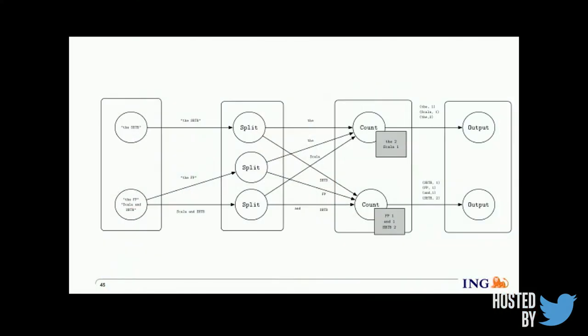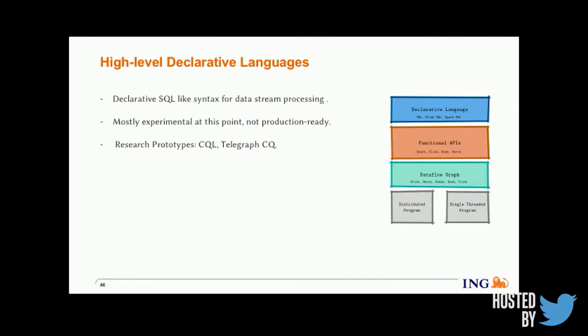We need to be careful about this kind of partitioning because it might result in data skew. The next level of abstraction is high-level declarative languages such as SQL, Flink SQL, and Spark SQL — SQL abstractions on top of the functional API. However, these have mostly been research prototypes so far; for instance, the Flink SQL documentation states it's not ready for production use cases, so we won't dive into this further.